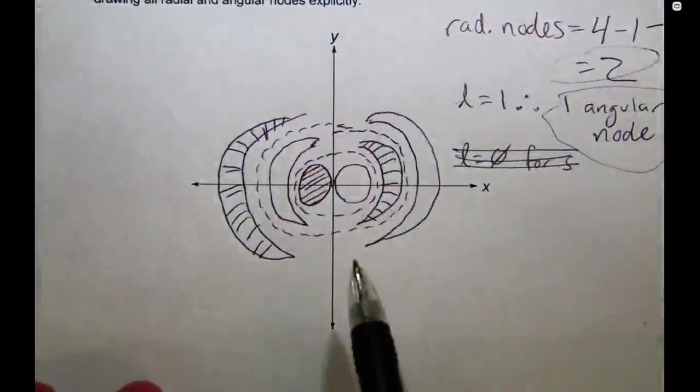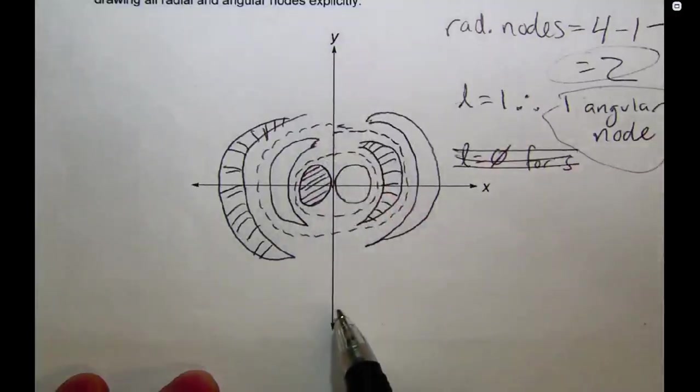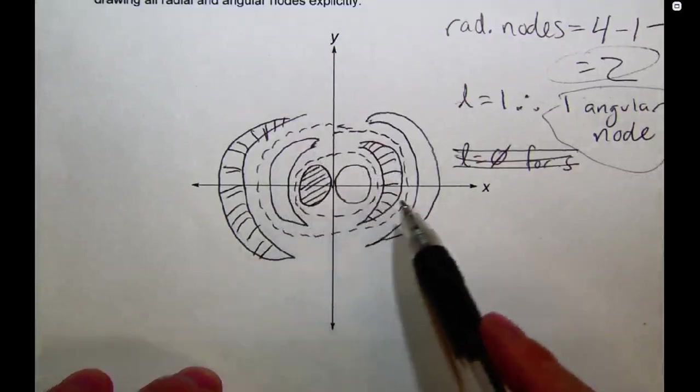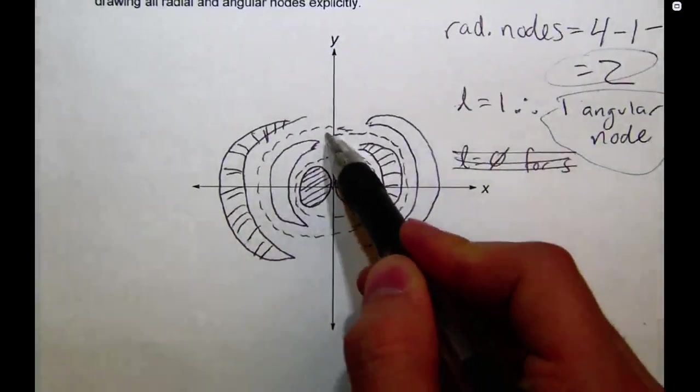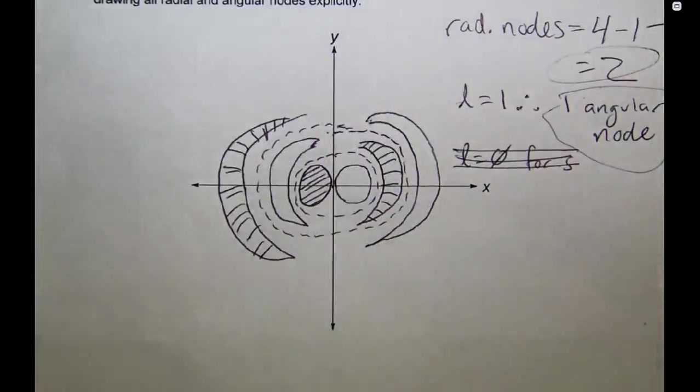So, important parts of this graph. Drawing. Angular node here. That's the YZ plane, as some of you noted on your quizzes. Got two radial nodes. These go all the way around because they're spherical in nature. So, one radial node, two radial nodes. And then I've got alternate shading or phasing on my p orbital lobes. So, I have a different colored pen here.